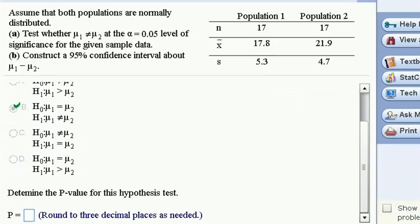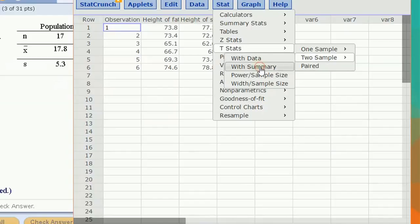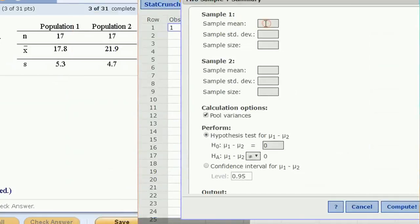Now let's go to StatCrunch and clear this out and do a new hypothesis test. Go to t stats, two sample with summary data. I've got sample mean for population one, 17.8, standard deviation 5.3, sample size of 17. Sample mean for the second is 21.9, 4.7 standard deviation, and again 17. I do not want to pool variances. Only pool variances if you want to assume that variance of the two populations is the same. But we don't want to assume that. The null hypothesis is that mu1 minus mu2 equals zero. That's equivalent to mu1 equals mu2. And so we pick not equal to for our alternative and click compute.